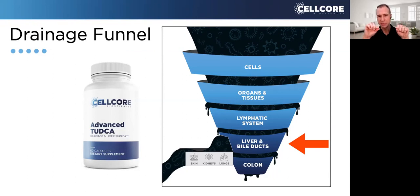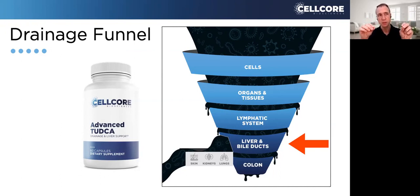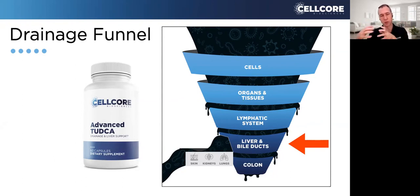One of the most common places clinically to be clogged up in this funnel is the liver and bile duct system. When that's clogged up — or the colon — and it backs everything else up, there's this thing called the blood-bile barrier, where instead of the toxin byproducts dumping into the bile and going into the small intestine and large intestine and being excreted, they essentially get sent into the blood circulation.